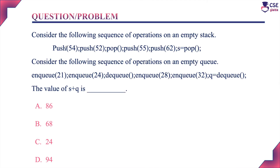The problem: consider the following sequence of operations on an empty stack — push 54, push 52, pop and then push 55, push 62, and finally S is equal to pop.